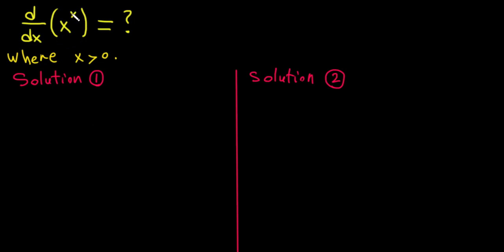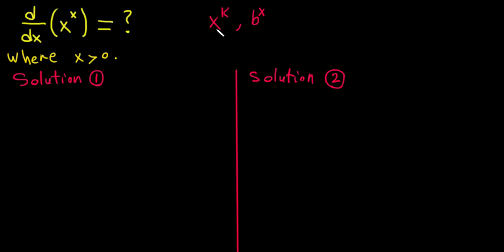Let's find the derivative of this expression. It looks complicated but it's not hard to solve. First, we notice that this expression is not a power function of the form x^n, nor an exponential function of the form a^x, so the standard differentiation formulas for those functions cannot be applied here. We need to find another method.